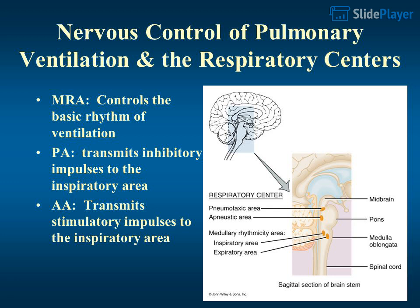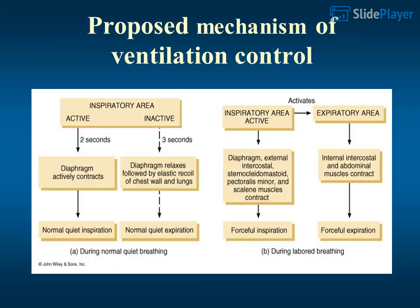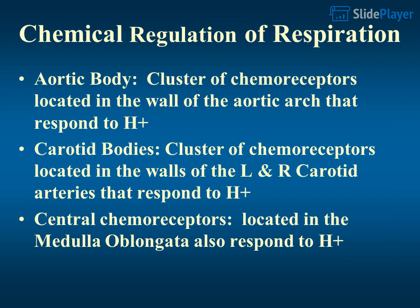Nervous control of pulmonary ventilation and the respiratory centers: the medullary rhythmicity area (MRA) controls the basic rhythm of ventilation. The pneumotaxic area (PA) transmits inhibitory impulses to the inspiratory area. Chemical regulation of respiration involves chemoreceptors: the aortic body is a cluster of chemoreceptors in the wall of the aortic arch that respond to H+; carotid bodies are clusters of chemoreceptors in the walls of the left and right carotid arteries that also respond to H+; and central chemoreceptors are located in the medulla oblongata and also respond to H+.